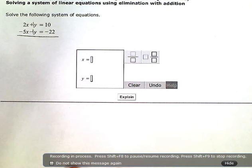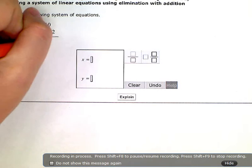So 2x minus 5x will give me negative 3x. This plus y minus y, these two eliminate. That's why we call this the elimination method. Then I'm going to add 10 minus 22 is negative 12.